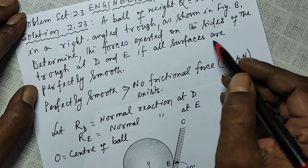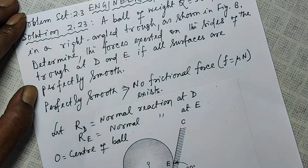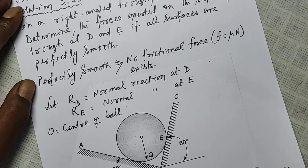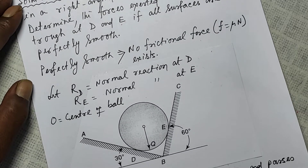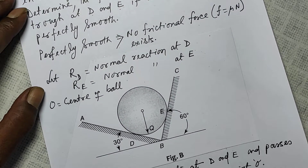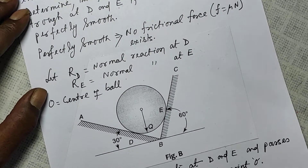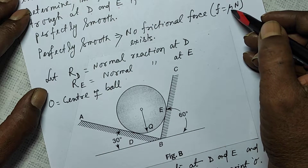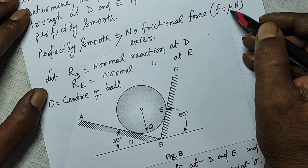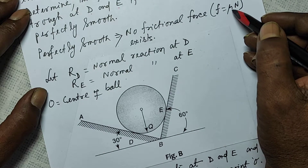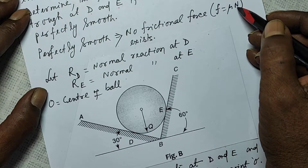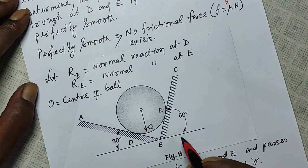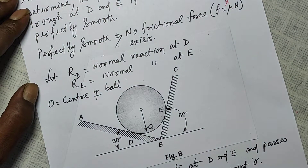All surfaces are perfectly smooth, meaning there is no frictional force present. Frictional force is given as the coefficient of friction times the normal reaction, but since surfaces are smooth, this term is absent.